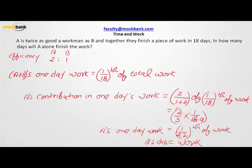We combined two methods here. One is efficiency and the second is ratio. That is the beauty of this problem. We knew the efficiency ratio, we wrote it as 2 is to 1. Then we found out what is one day's work of A and B together, that comes out as 1 over 18th of the total work. Now in this 1 over 18th of work, the contribution of A and B will be 2 is to 1 ratio.